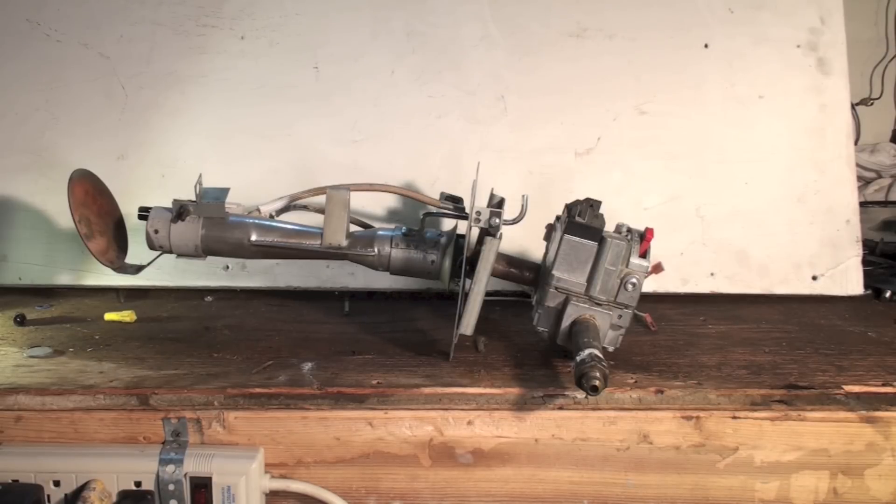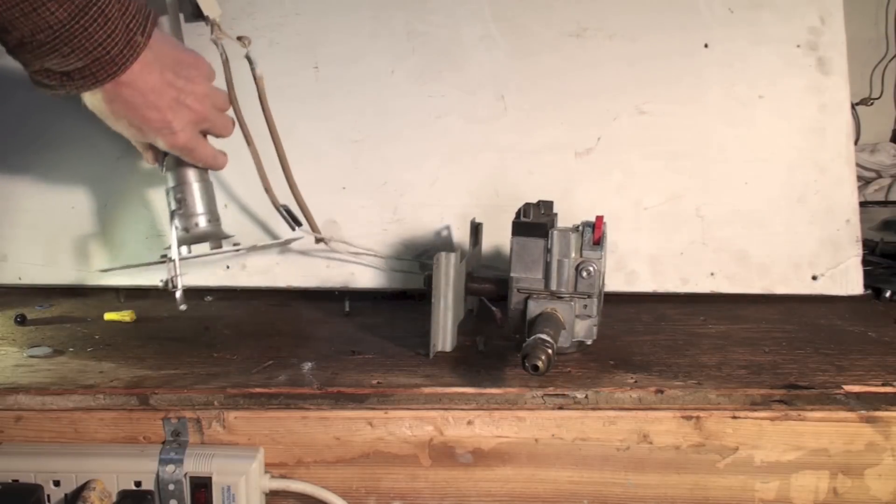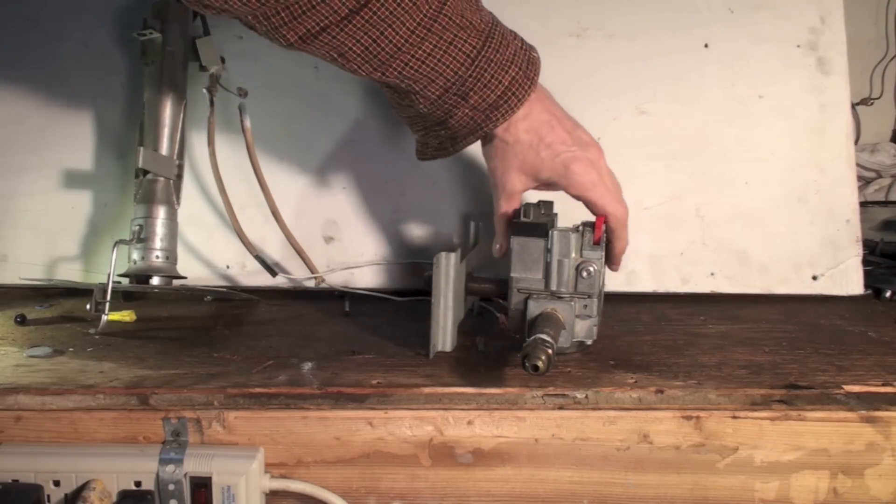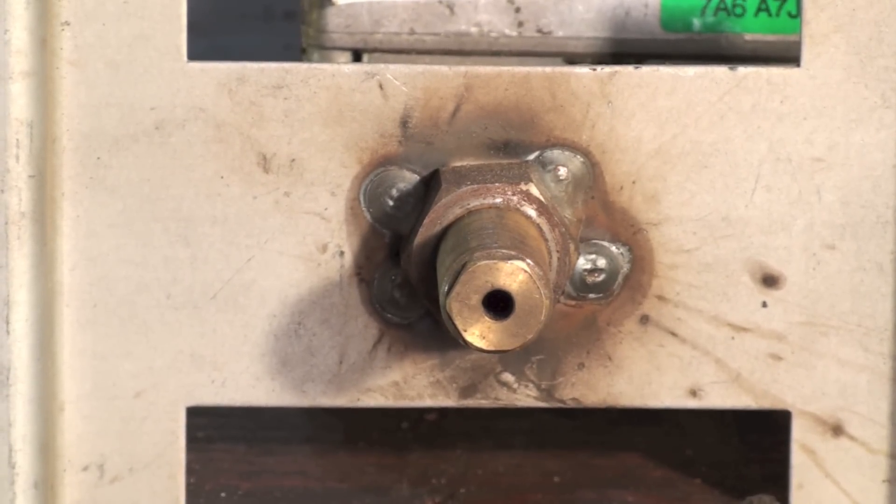Okay, here's the burner assembly out with the gas valve on it. First let's take a look at the orifice. Now you can see we just have one large orifice because we only have one burner in this thing.